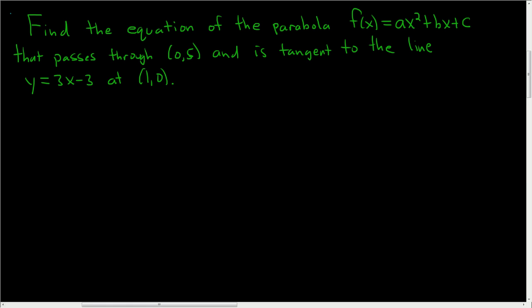Find the equation of the parabola that passes through the point (0, 5) and is tangent to the line y = 3x - 3 at (1, 0). Solution: